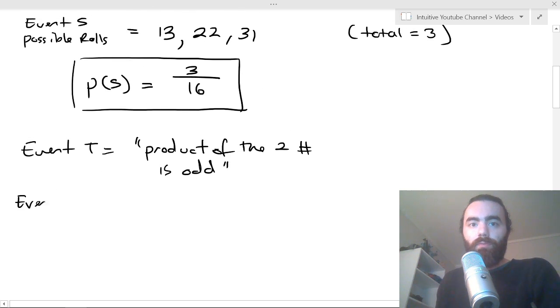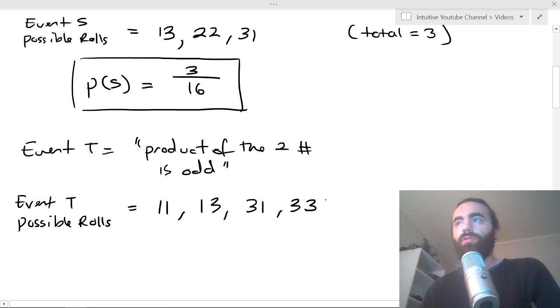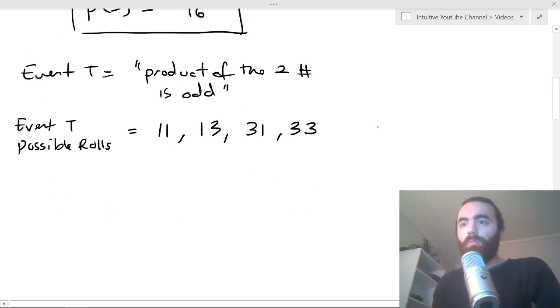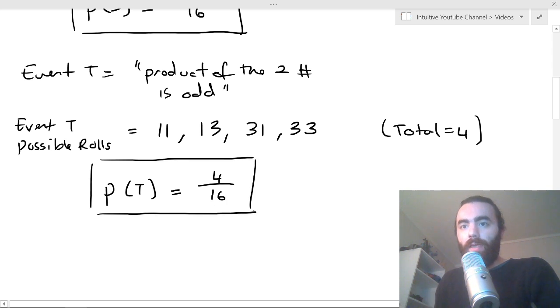Well, let's look at event T possible outcomes or possible rolls. Let's think, 1-1, well 1 times 1 is odd. So 1-1 is 1. 1-2, no. 1-3, yes. 1-4, no, that's even. 2-1, no. 2-2, 2-3, 2-4 is all going to be even when you times it together. And then you can have 3-1, yep, that'll be odd. 3-2, no. 3-3, yes. 3-4, no. And then 4-1, 4-2, 4-3, 4-4 will all be even. So these are your possible ways for that. So the total there is 4. So that means that the probability of T is equal to 4 over 16.